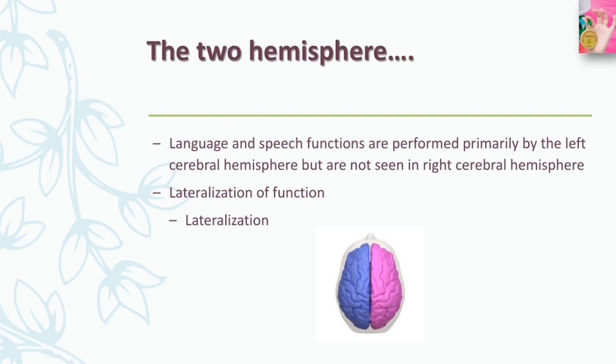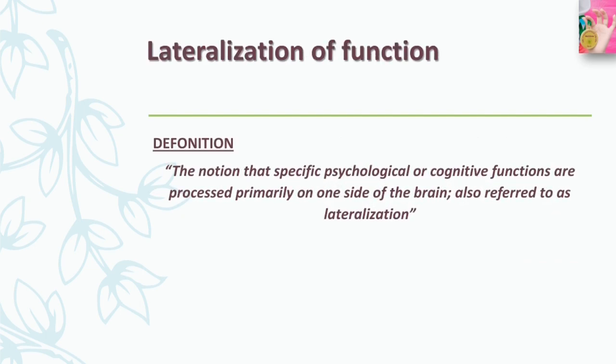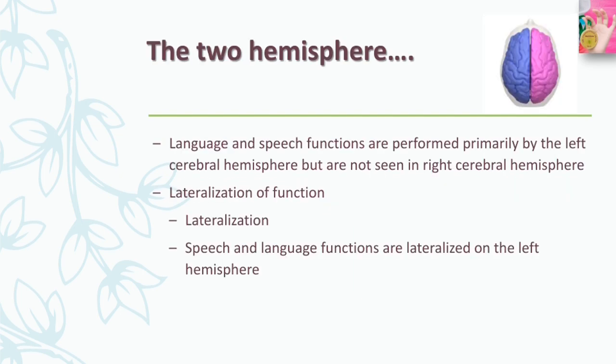Autopsies of these patients revealed consistent damage to an area on the left temporal lobe, today called Wernicke's area. The notion that one hemisphere exerts more control over or is more involved in processing particular psychological functions is termed lateralization of function — the idea that specific psychological or cognitive functions are processed primarily on one side of the brain. Speech and language functions are lateralized on the left hemisphere, and generally the left hemisphere exerts greater control over speech and language abilities in virtually all right-handed and in the majority of left-handed people.